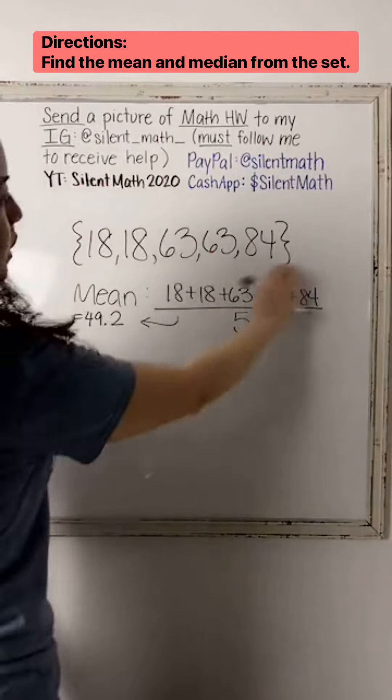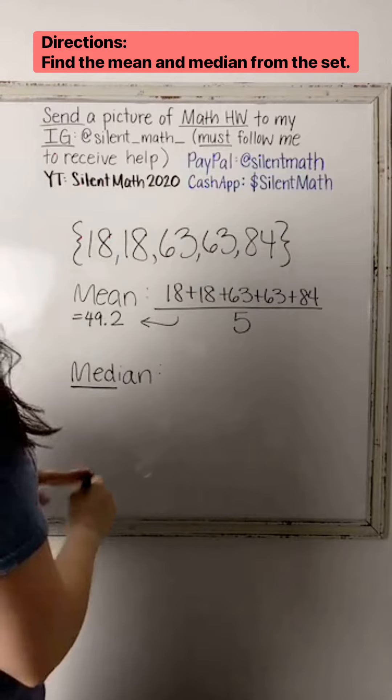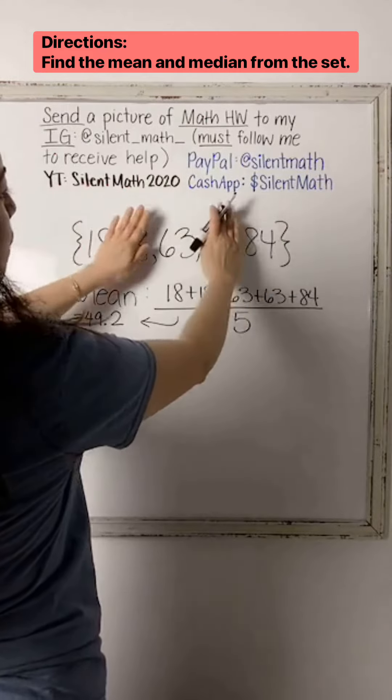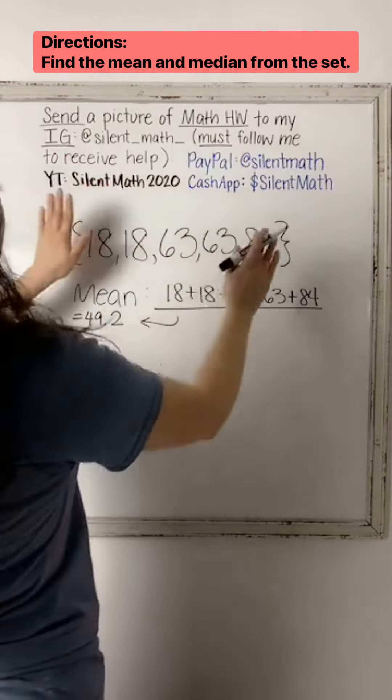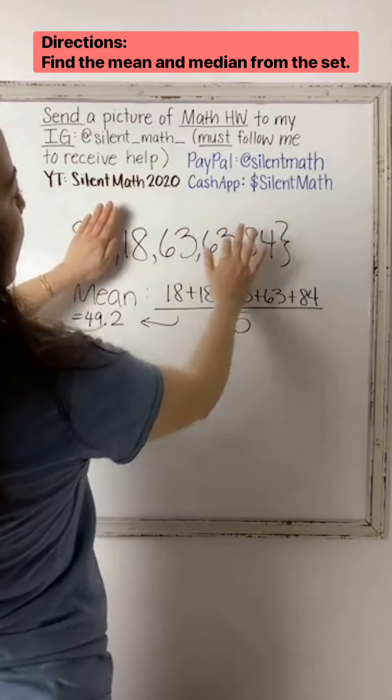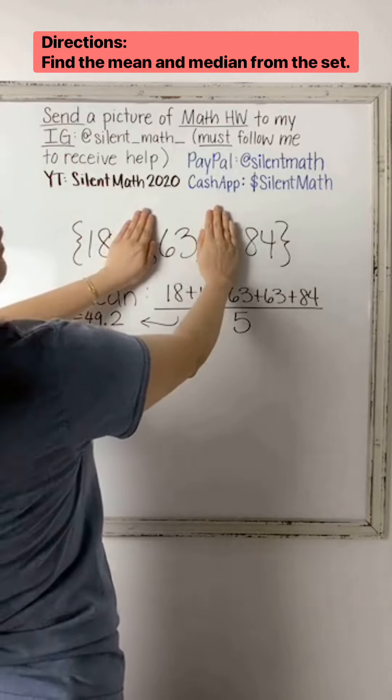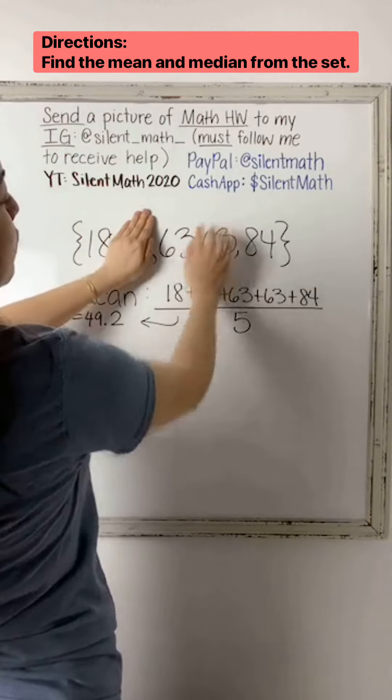So these are all in order, right? It goes from least to greatest. What I'm going to do is move towards the middle. If I put my hand on the 18 and the 84, now I have these three numbers left. I'm going to keep doing that, and then we reveal the middle number, which is 63.